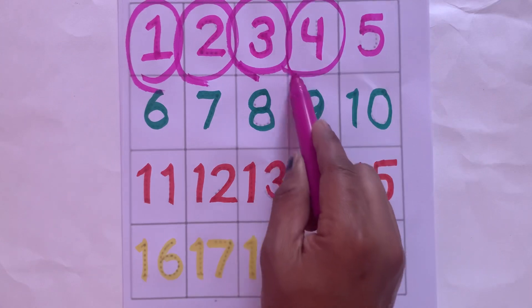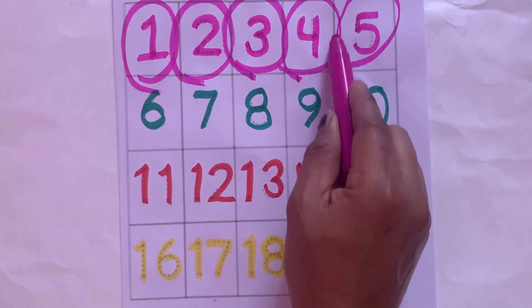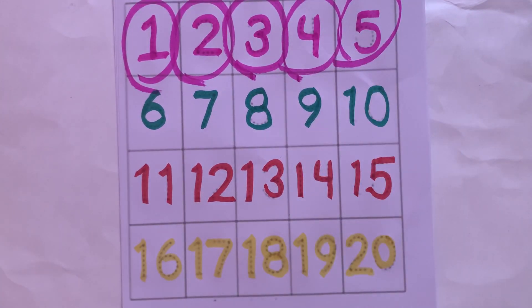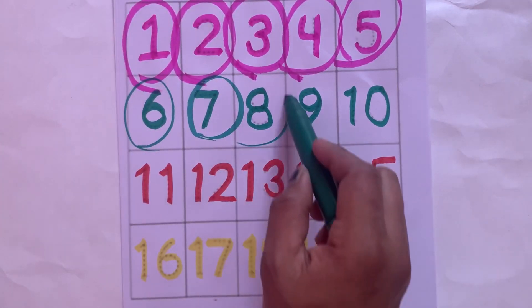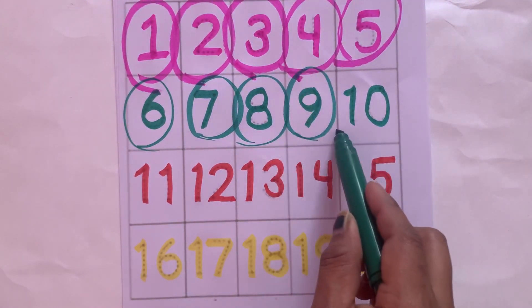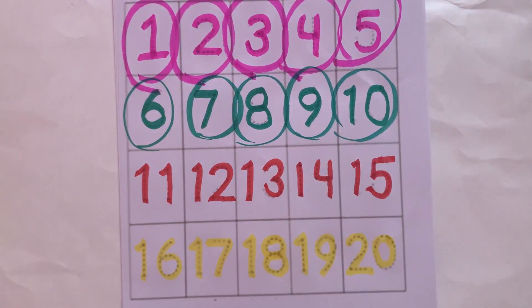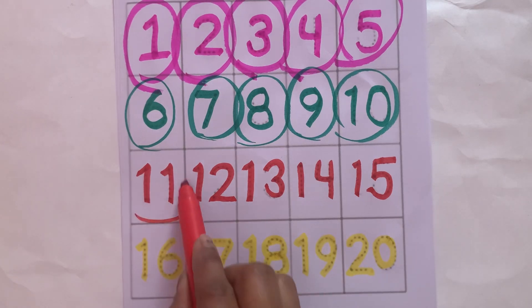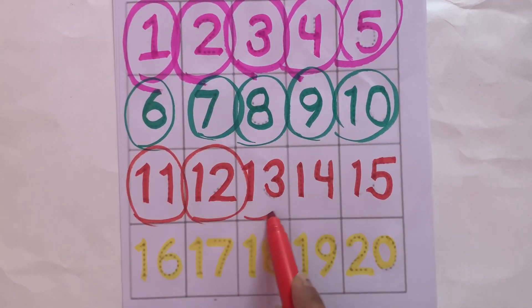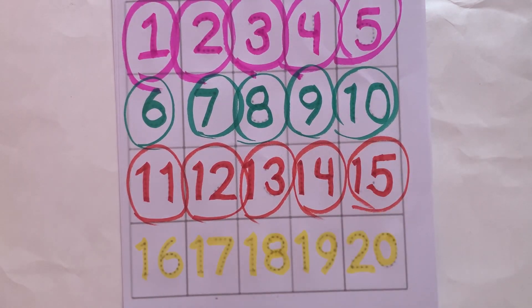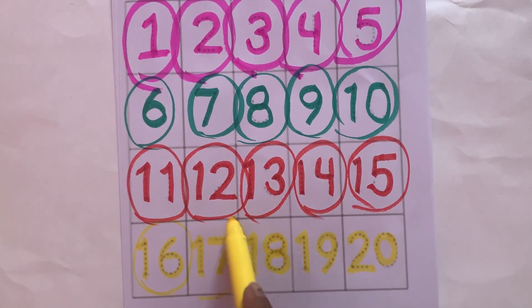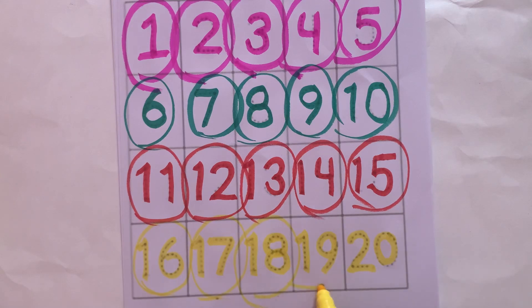Six, seven, eight, nine, ten, eleven, twelve, thirteen, fourteen, fifteen, sixteen, seventeen, eighteen, nineteen, twenty.